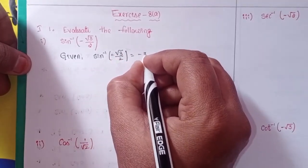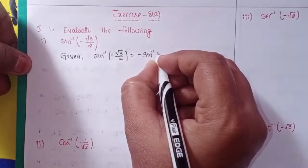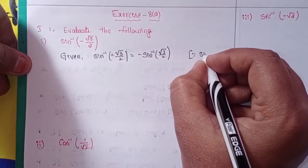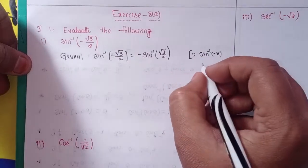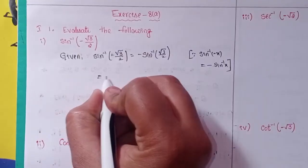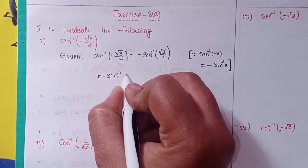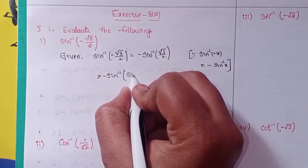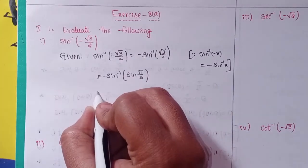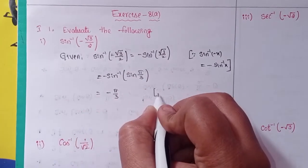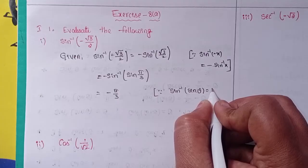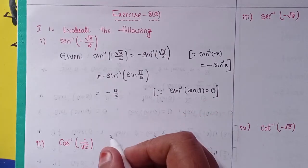Given sin inverse of minus root 3 by 2 equals minus sin inverse of root 3 by 2, because sin inverse of minus x equals minus sin inverse x. Next, minus sin inverse can be written in terms of sin as sin(π/3). So the answer is minus π/3, because sin inverse of sin theta equals theta.